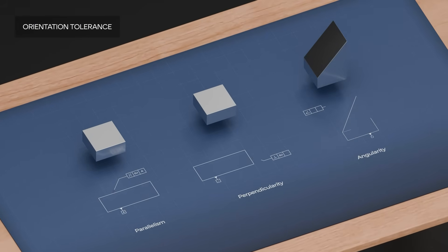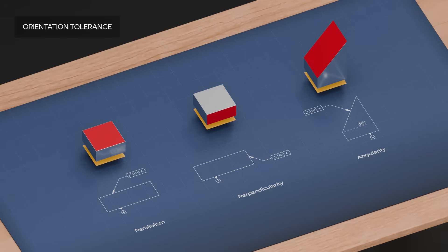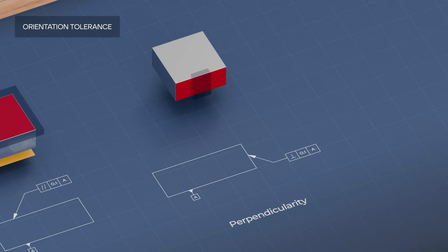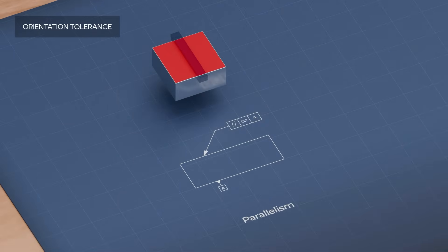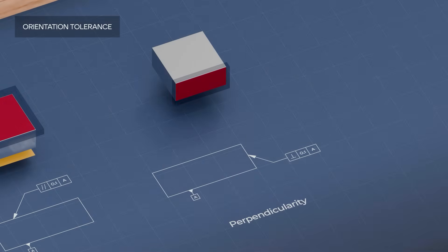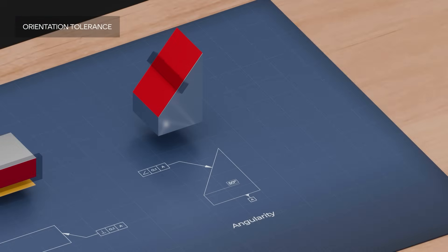Parallelism, perpendicularity, and angularity all need a datum. The tolerated feature should lie between two parallel theoretical planes, with the distance between them being the tolerance value. These theoretical planes are either parallel, perpendicular, or at a certain angle to the given datum.